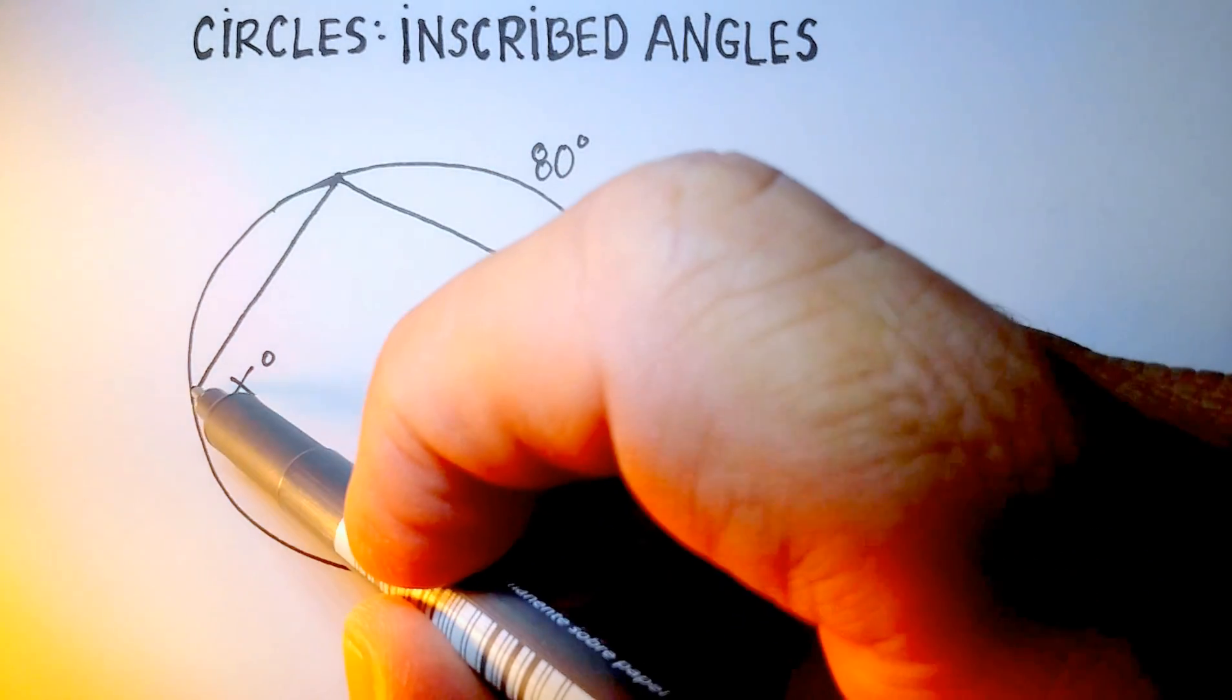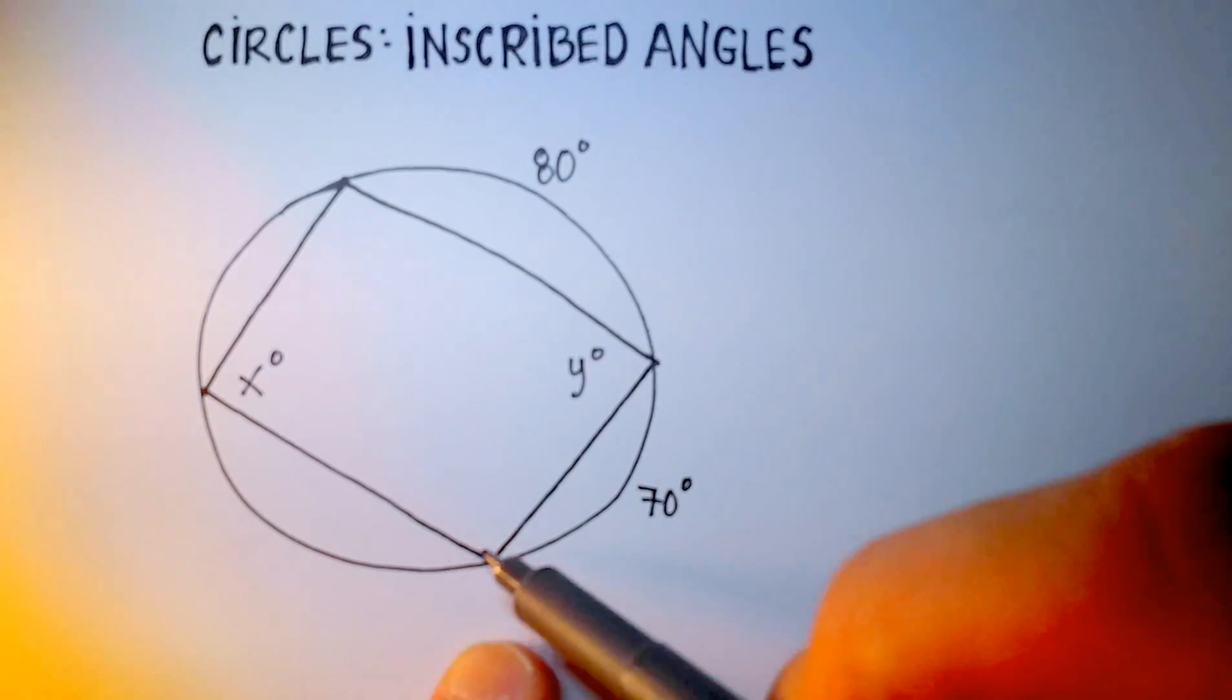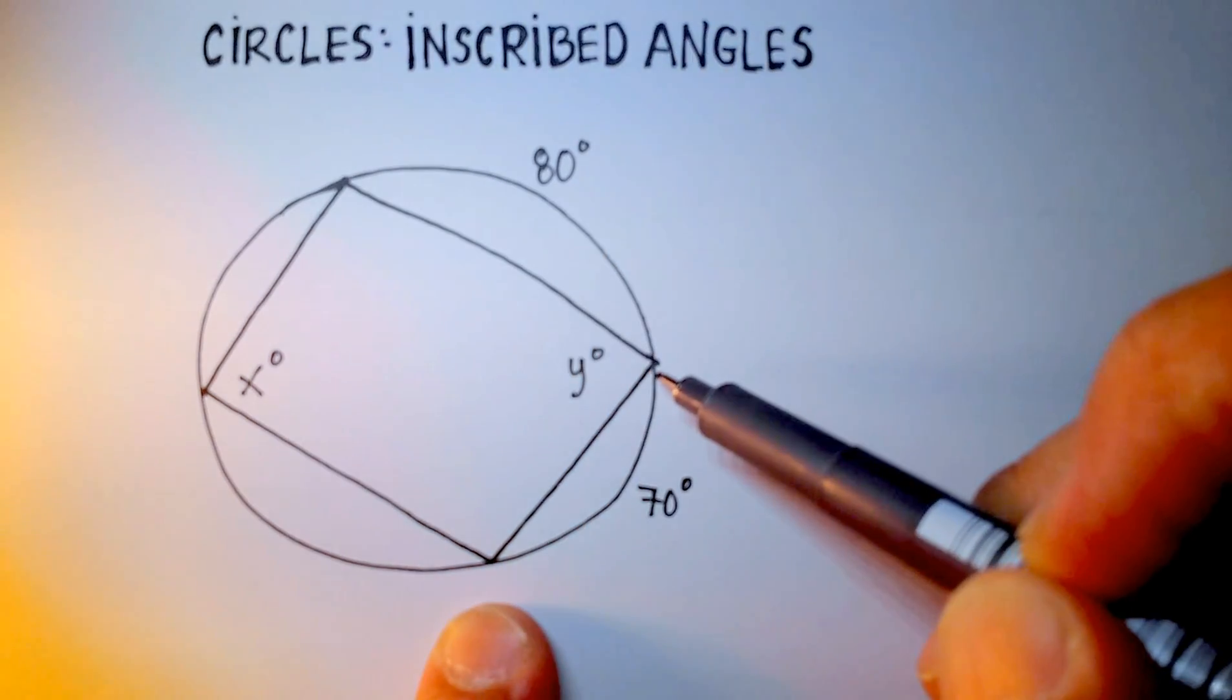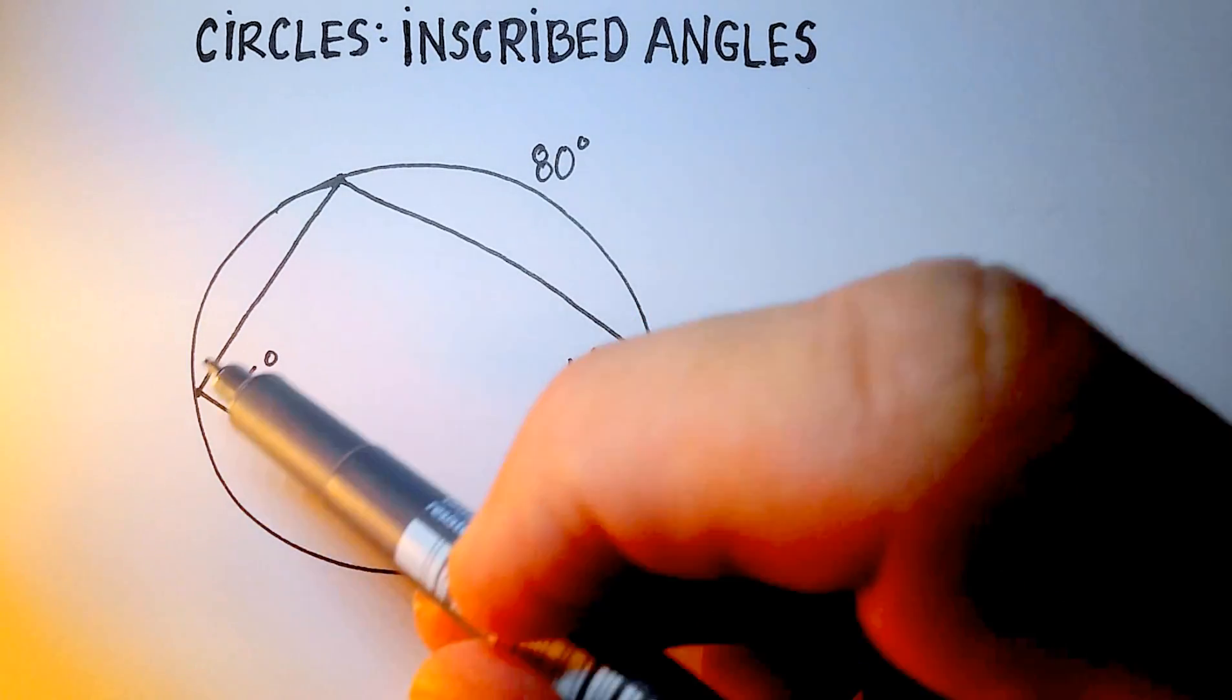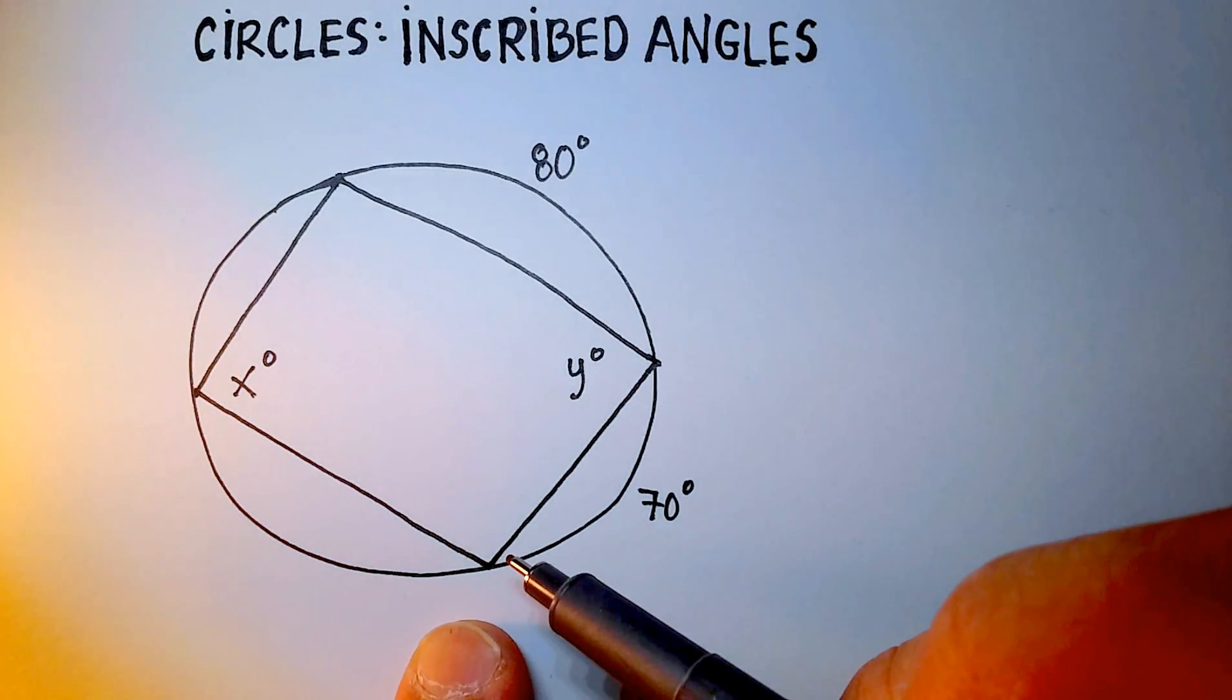And you'll notice that each of these angles, angle x for example, is what they call an inscribed angle.